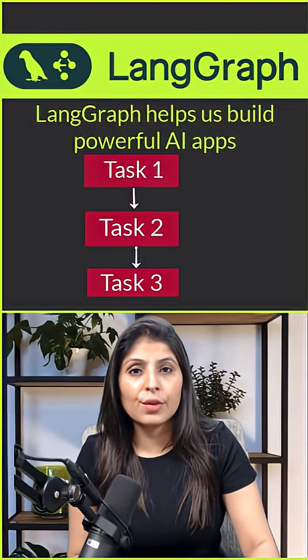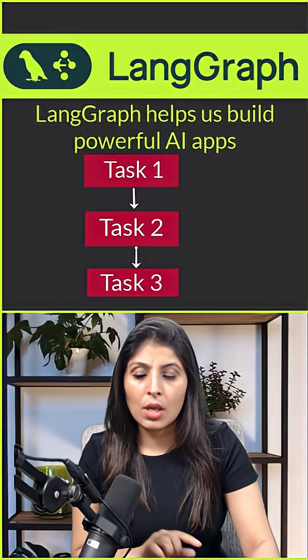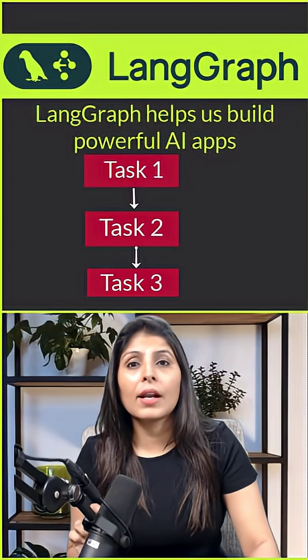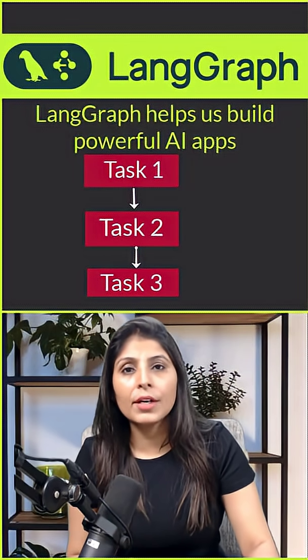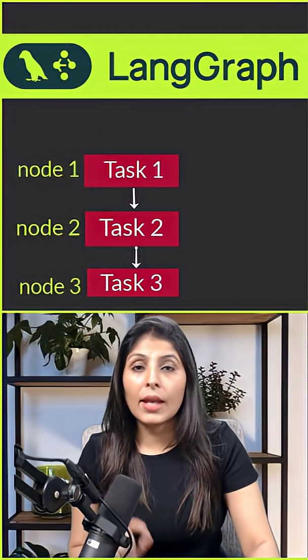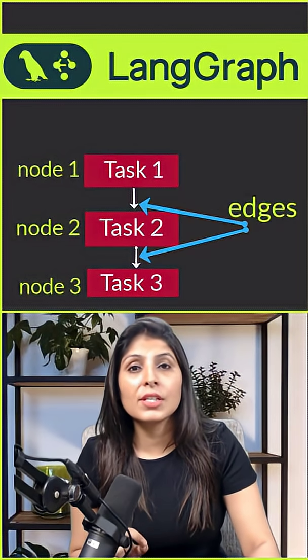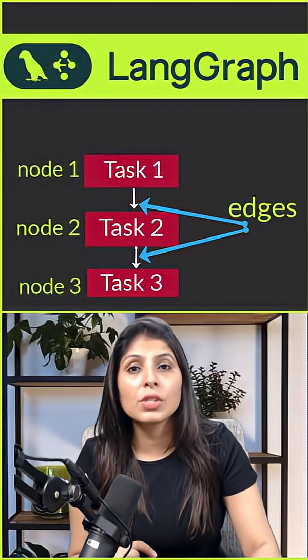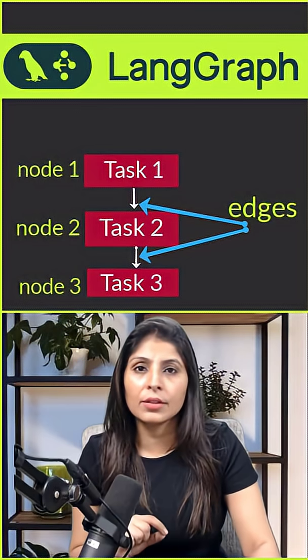With LangGraph, we can build AI apps like a flowchart. We have all seen flowcharts with boxes connected by arrows. In LangGraph, each box is a task and we call it a node. The connections between these boxes are called edges, and they show how information moves from one node to another.